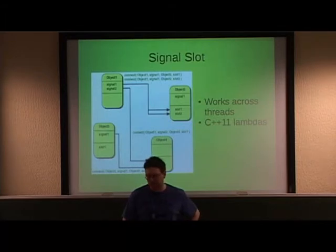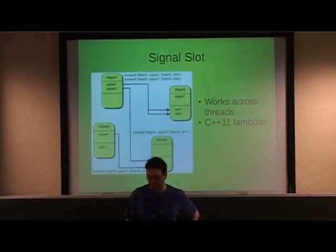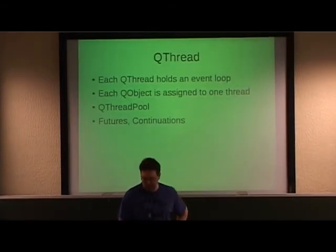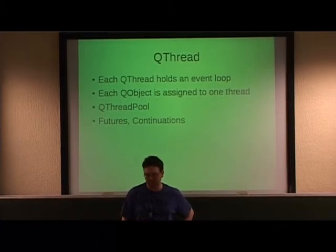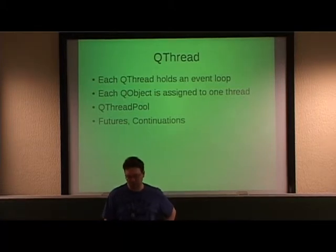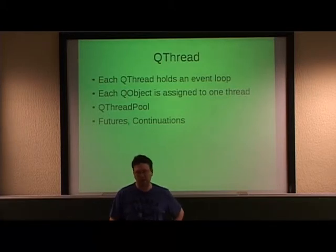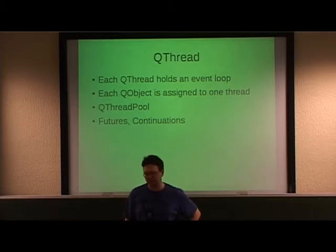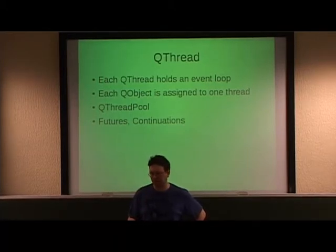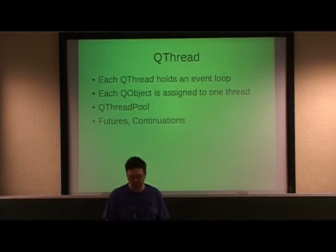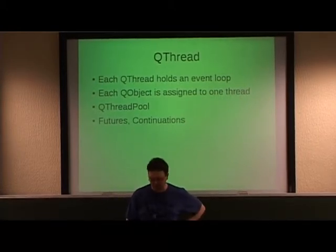In C++11, you can even connect lambdas to signals — you can say if object 1 emits this signal, then do int x plus 1 or something. The QThread object holds an event loop, and each QObject is assigned to one QThread. If you start without creating QThreads, you have one main UI thread. QThread also has a QThreadPool class, which can be used to assign tasks to a specific number of threads — maybe you want to convert 1,000 images using four worker threads per CPU core. There's also support for futures and continuations for asynchronous programming.